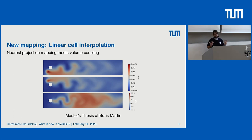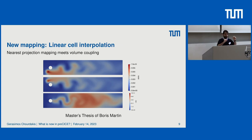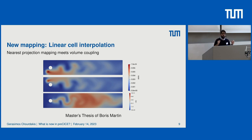Coming to more unique features, there is a new mapping feature called Linear Cell Interpolation, which was the result of Boris Martin's thesis. This is essentially what you get if you mix nearest projection mapping and volume coupling. Nearest projection mapping is when you know more about your mesh than just the nodes — you know how they are connected, so you can interpolate on the edges. Volume coupling means overlapping domains in 2D and 3D. Linear Cell Interpolation projects onto the cell itself and interpolates based on the tetrahedra defined there.